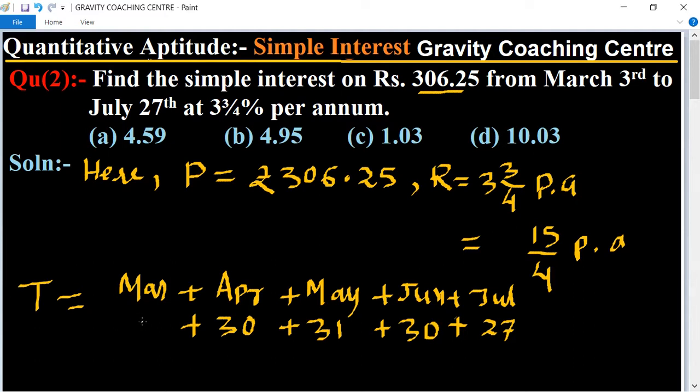But we omitted the first day, so the total number equals 28. Total equals 146 days. First day is omitted here.